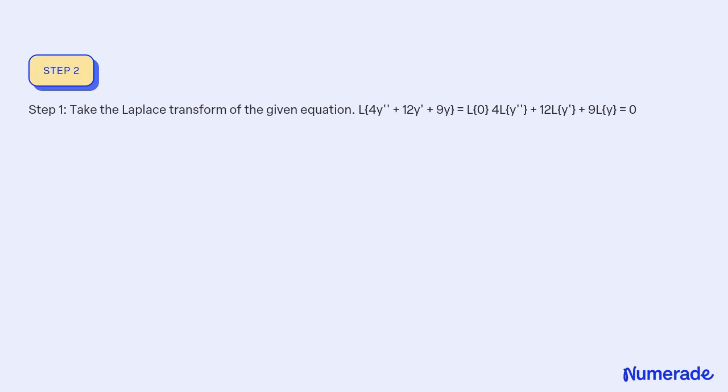Step 1: Take the Laplace transform of the given equation. L{4y'' + 12y' + 9y} = L{0}, which gives 4L{y''} + 12L{y'} + 9L{y} = 0.